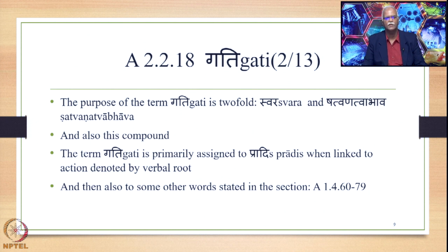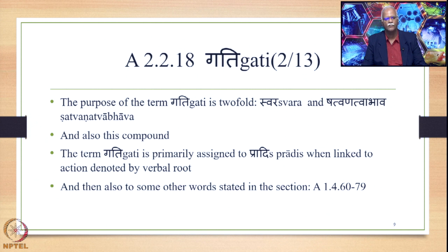The purpose of the term Gati is two-fold. First, the Swara or specific accent, which is stated by Sutras like Gatiranant Taraha or Gatir Gatav. Second, Shatva Natva Abhava — Shatva and Natva are the two retroflex substitution operations studied earlier, prescribed in the Ashtadhyayi using the technical term Upasarga. When the Gati Saudhnya is given, Shatva and Natva are not stated — there is negation of Shatva and Natva.